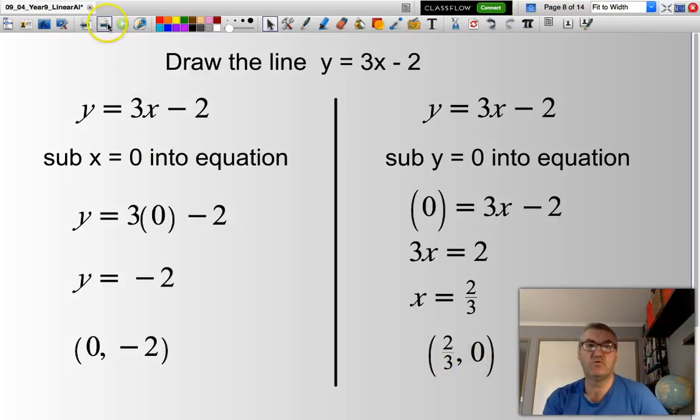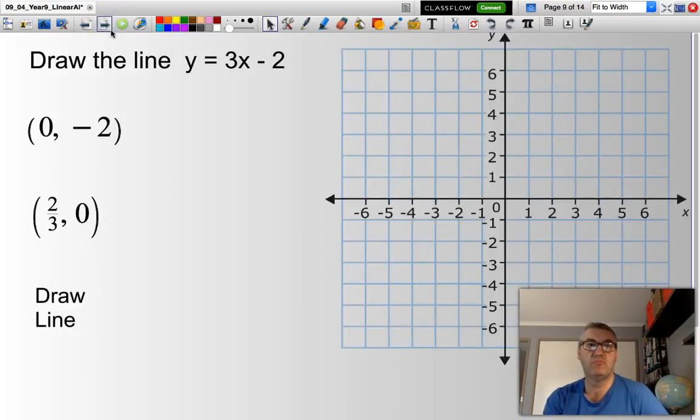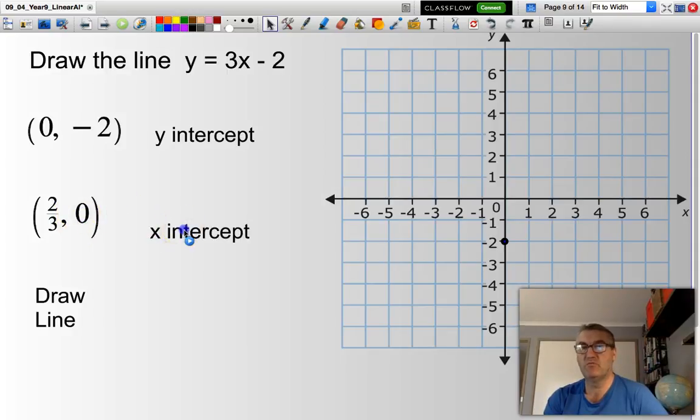I can use those two coordinates and plot them on the Cartesian plane. So, coordinate 1, (0, -2). There we go. That is my y-intercept. 2/3, 0. I'm going to find (2/3, 0). It will be my x-intercept. And, I just need to draw the line. It has to go through those two points. Job done.